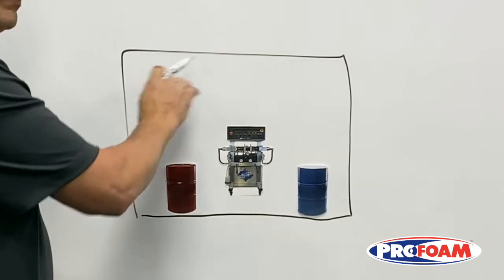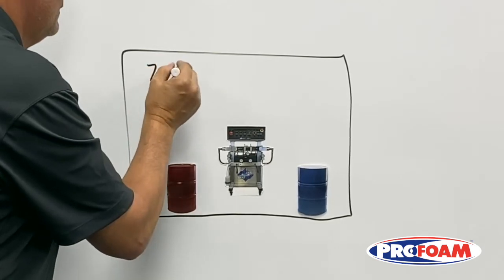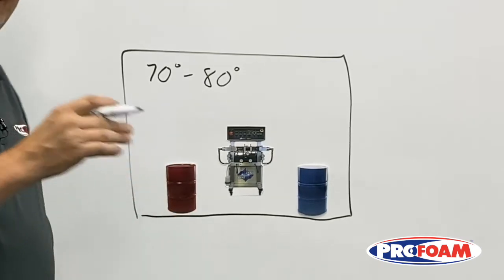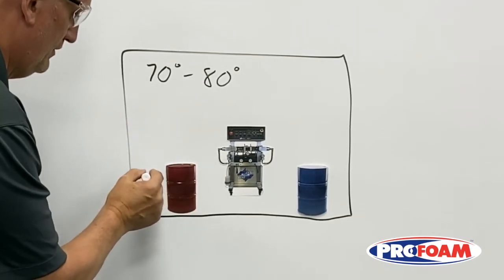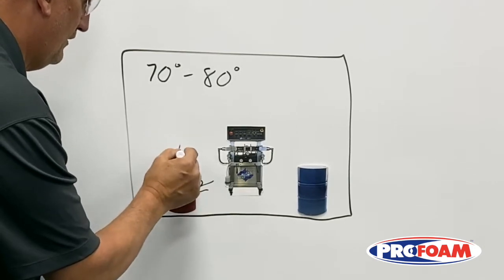First, we have to heat the area that's in that space. 70 to 80 degrees. So that's going to help warm the drums from the sides and from the top.